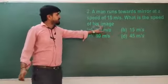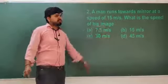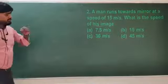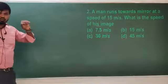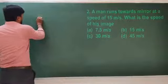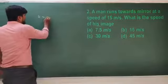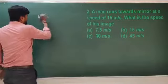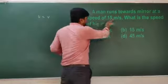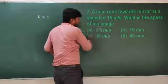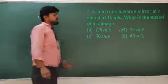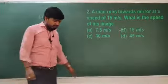When the man is moving towards the mirror or away from the mirror at a certain speed, at the same time the image also moves with the same velocity. So the velocity of the man equals the velocity of the image. The man is moving with a speed of 15, so the image is also moving with a speed of 15 meters per second.